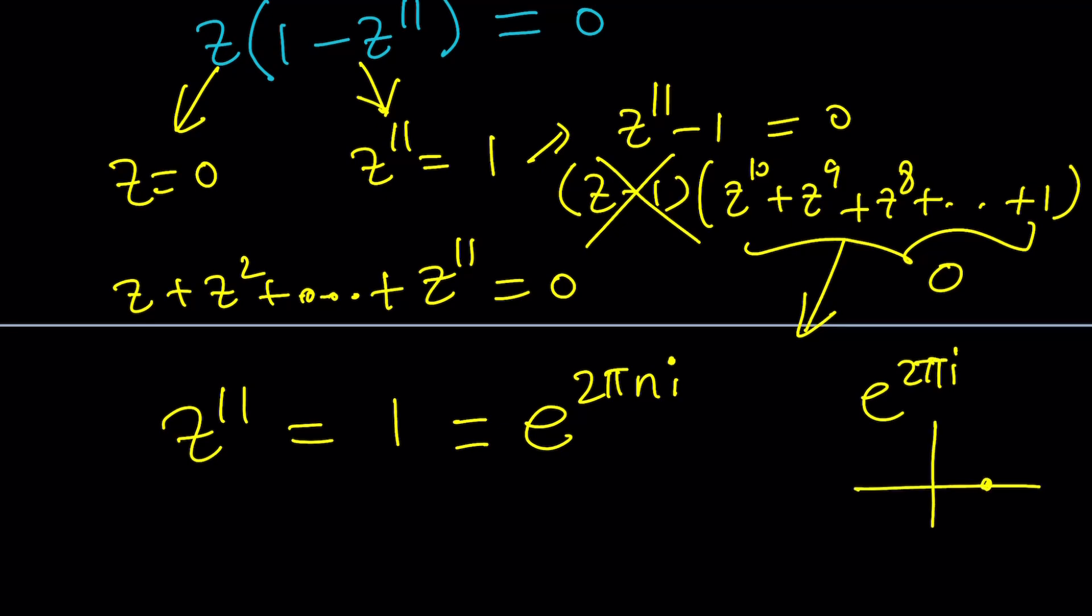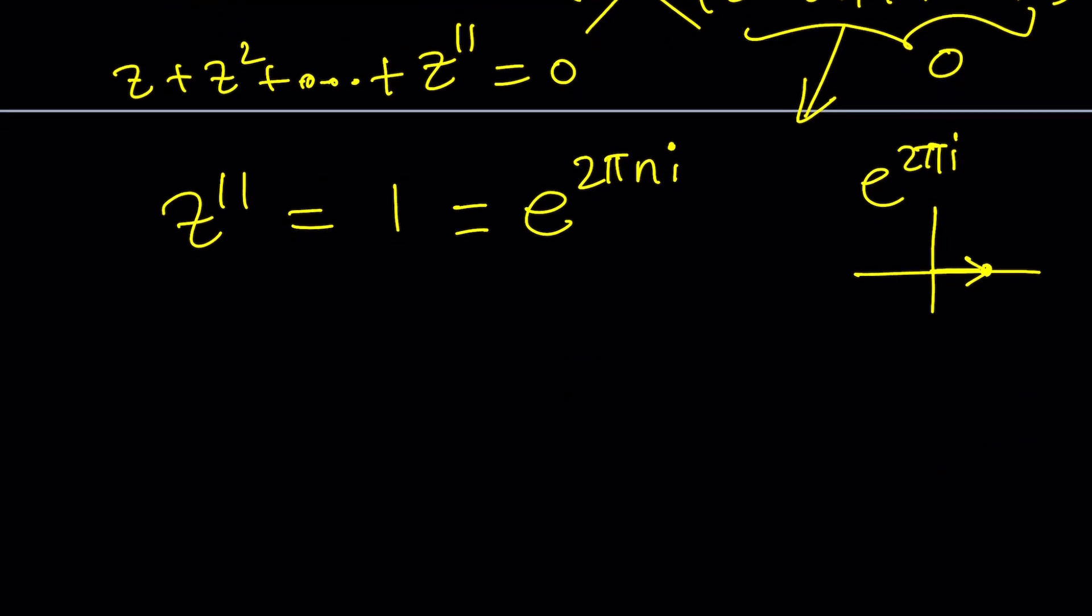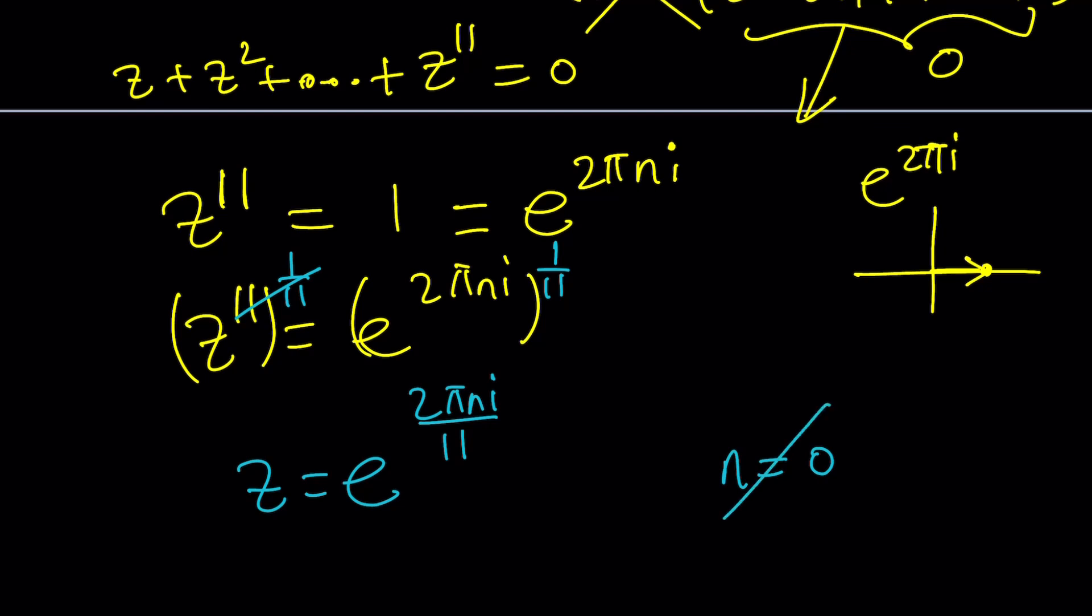Because in the Argand plane, this would be two pi radians. But it would also be zero radians or four pi radians or six pi radians or million pi radians, infinitely many values. But don't worry, we don't have infinitely many roots. Wait a minute, did I say roots? Yes, we are going to be looking at roots of unity. Because if z to the 11th is equal to e to the power two pi n i, by raising both sides to the power one over 11, I should be getting all the solutions. And they're going to look like this: z equals e to the power two pi n i divided by 11. Of course, n equals zero is not going to work because z is not supposed to be one. Remember that all the time so you don't make any mistakes.